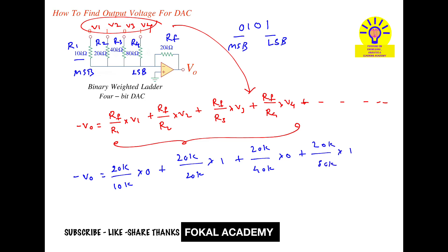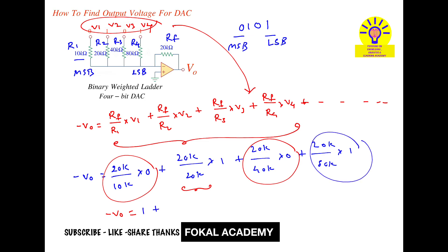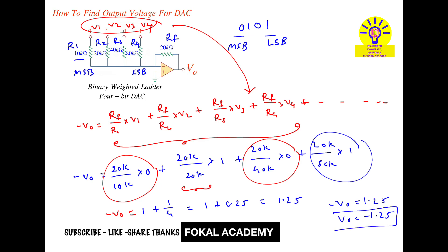Since 0 times anything equals 0, those terms drop out. Simplifying, we get minus V0 equals 1 plus 0.25, which equals 1.25. Therefore V0 equals minus 1.25 volts. This is the required output voltage for the given circuit. Thanks for watching — please subscribe, like, and share.